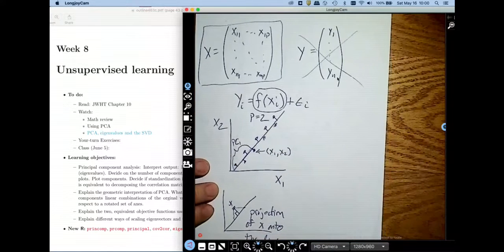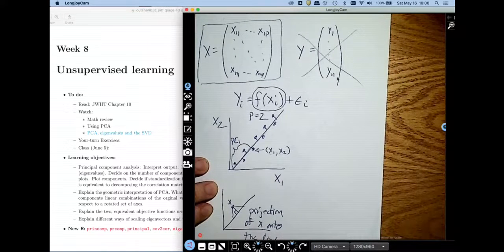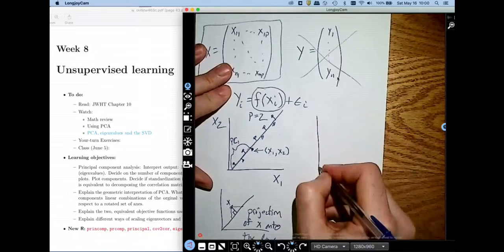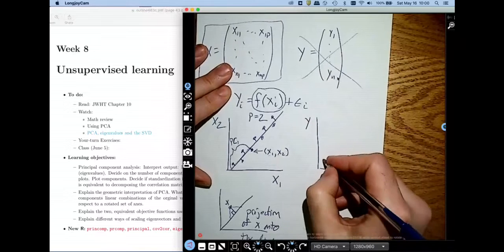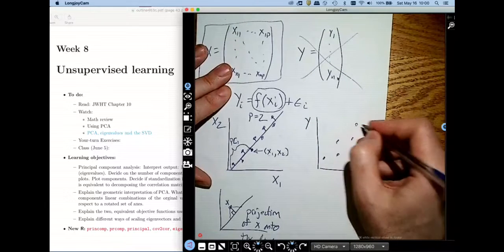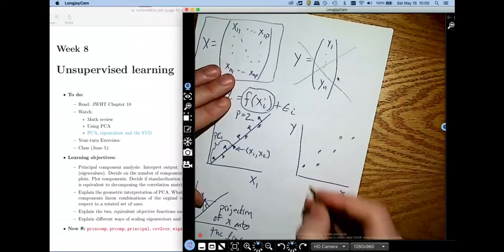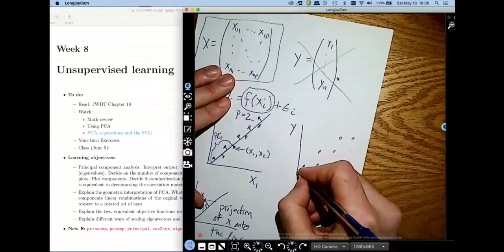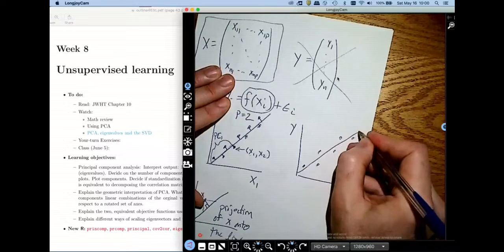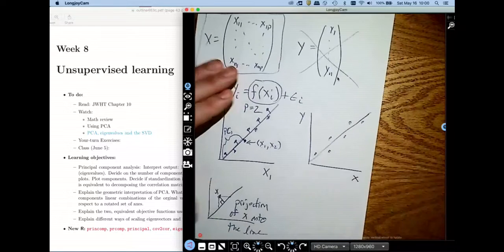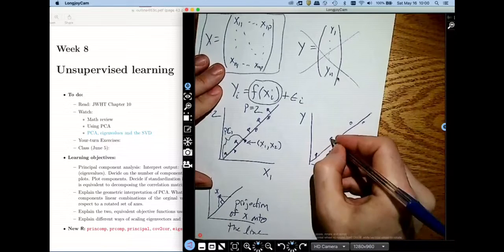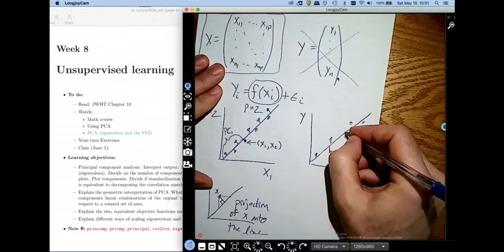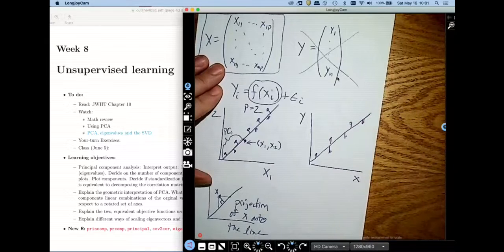I want to review how this is different from regression. In regression, we would start out with a very similar scatterplot. Maybe this is my scatterplot. But I would choose a slightly different line. Maybe I would choose this line instead. That's meant to be a line. How did we choose that line? We chose the line back in regression to minimize the sum of squared vertical deviations.